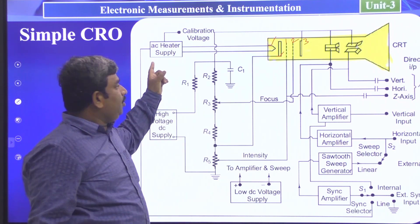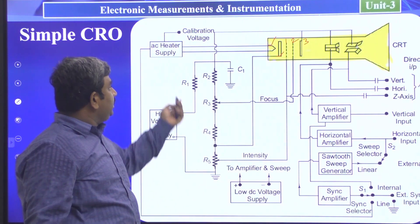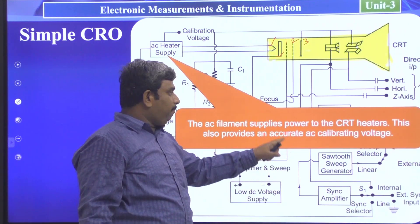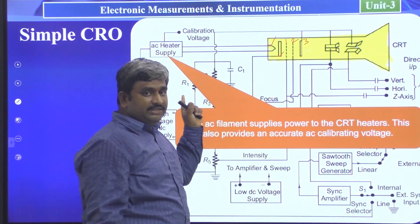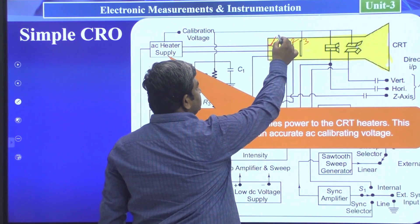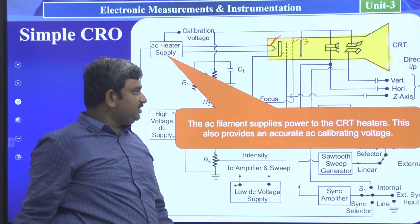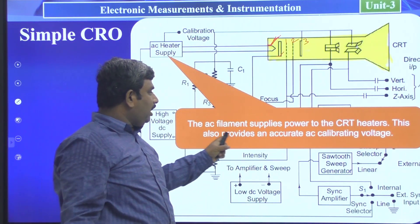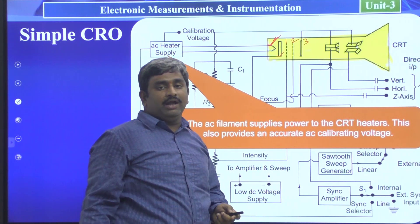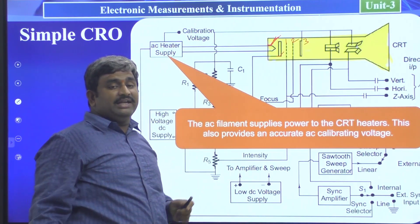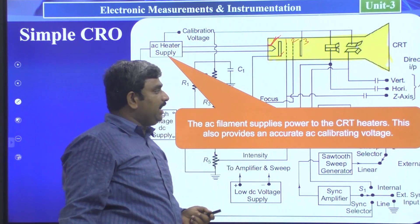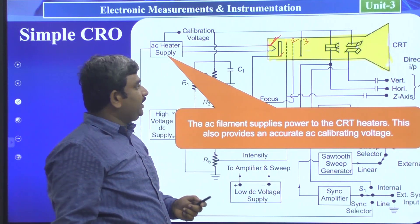Here we have an AC heater supply. The AC filament supply powers the CRT heaters — it is connected to the CRT heaters. It also provides accurate AC calibrating voltages, used to calibrate different types of AC voltages connected to the CRT. These are the AC supplies connected to the CRT section.